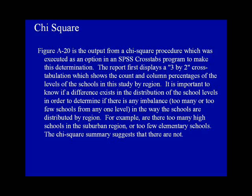The report first displays a 3x2 crosstabulation which shows the count and column percentages of the levels of the schools in this study by region. It is important to know if a difference exists in the distribution of the school levels in order to determine if there is any imbalance — too many or too few schools from any one level — in the way the schools are distributed by region. For example, are there too many high schools in the suburban region, or too few elementary schools? The Chi-square summary suggests that there are not.